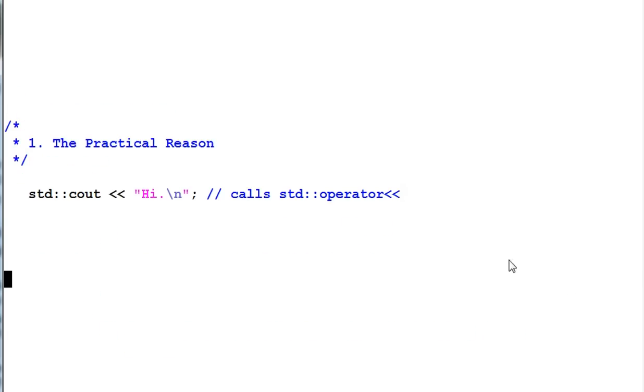Let me start with the practical reason. This is a code that we use very often. It prints out some message to the standard out. However, the reason this code can work is because of Koenig lookup.